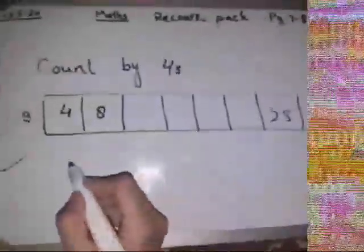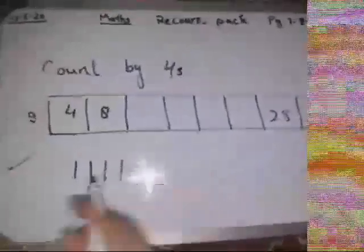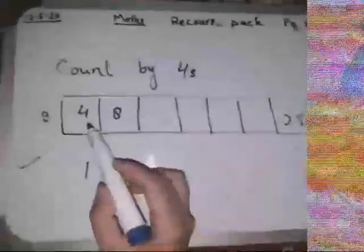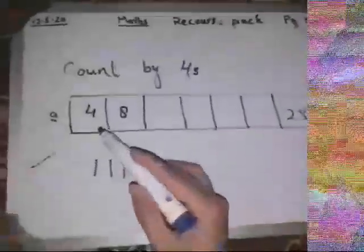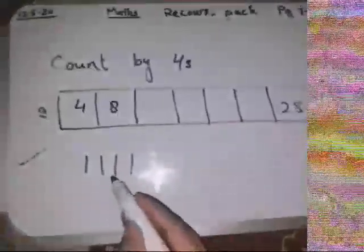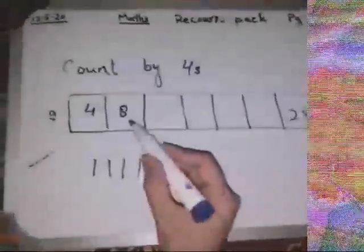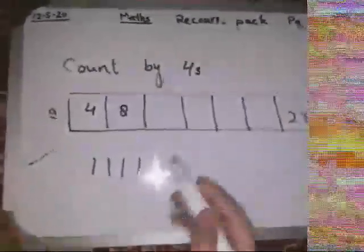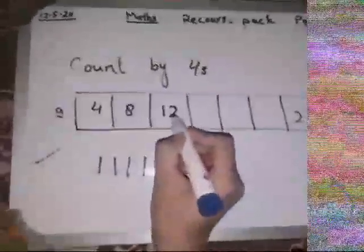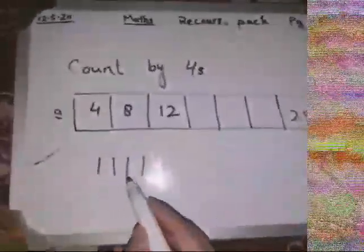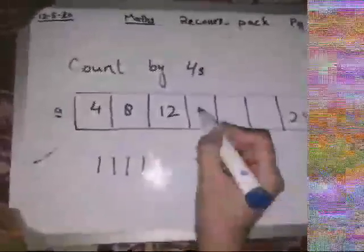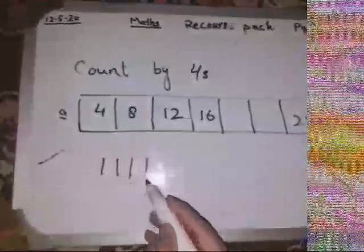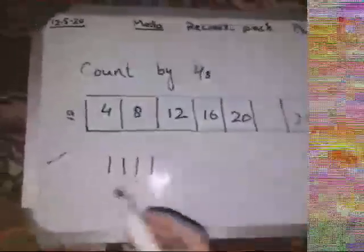Here is the question written on the board. Now one, two, three, four - four lines we will draw four lines because we are counting four. Now the first digit is four, five, six, seven, eight. Then the second is eight. Now count fours - nine, ten, eleven, twelve. We will write 12.